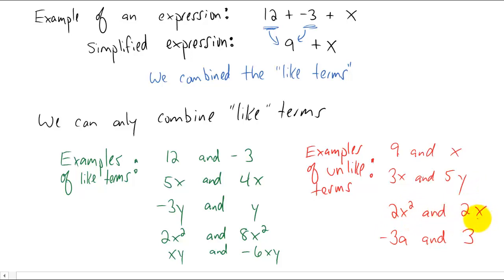2x² and 2x look alike. They have the same variable which is x and they even have the same coefficient which is two. But the power on x here is two and the power on x here is one so they are not like terms. They are unlike terms.